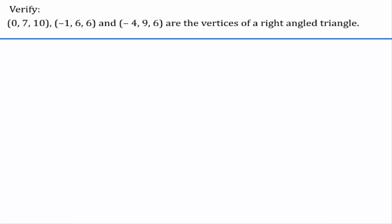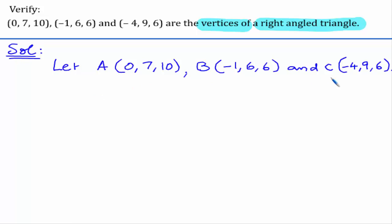In this problem, we are given 3 points and need to verify whether they are vertices of a right-angled triangle or not. Let us assume A as (0, 7, 10), B as (-1, 6, 6), and C as (-4, 9, 6). The formula to find the distance between two points is the square root of (x2 minus x1) whole square plus (y2 minus y1) whole square plus (z2 minus z1) whole square.